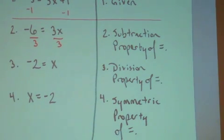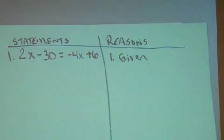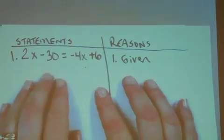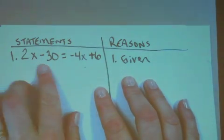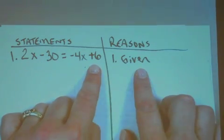We'll try another one. Here's example 2 to help us with our two-column proofs. I have the statement 2x minus 30 equal to negative 4x plus 6, and the reason why it was given.